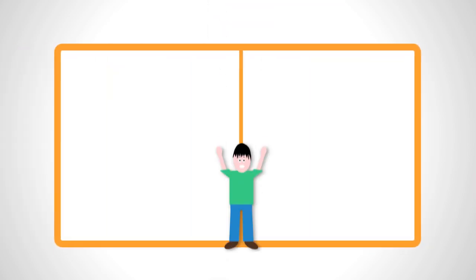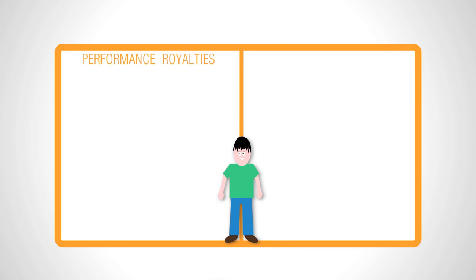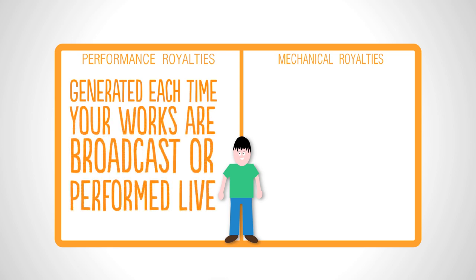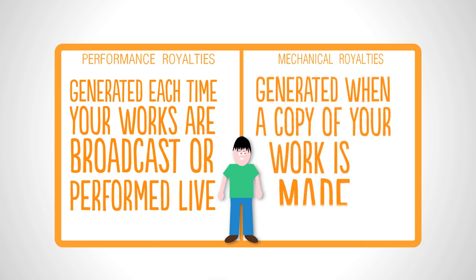The royalties come in two forms, performance and mechanical. Performance royalties are generated each time your works are broadcast or performed live. Mechanical royalties are generated when a copy of your work is made.